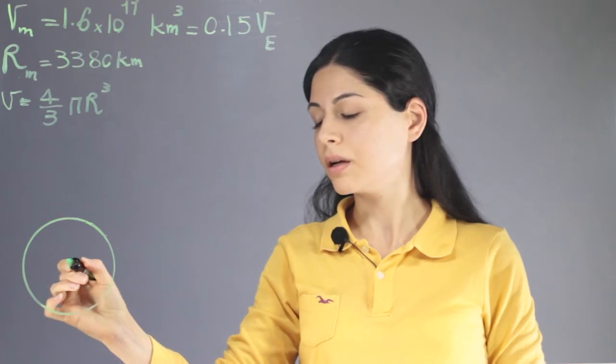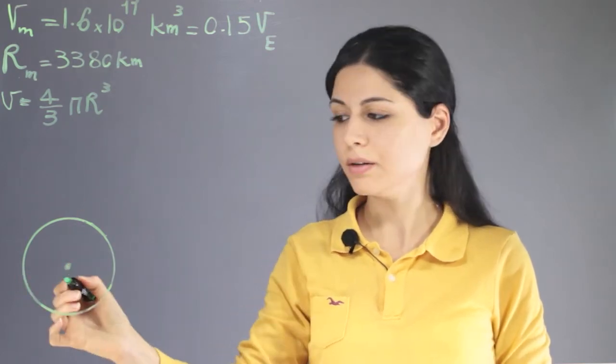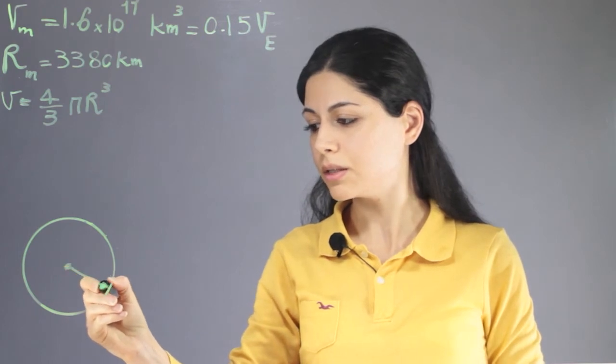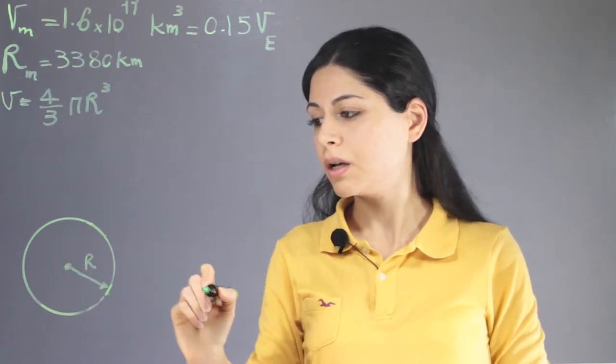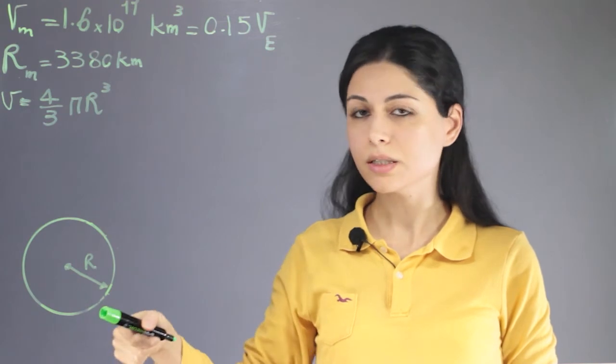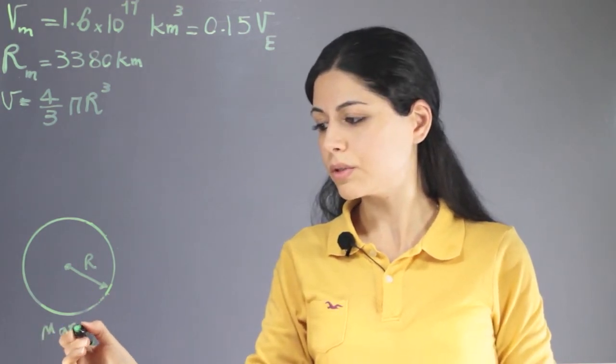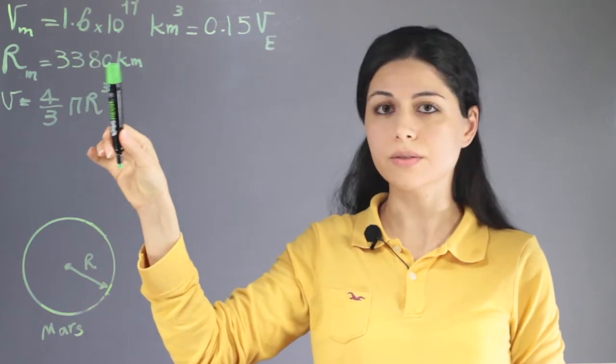So if this is the sphere and this is the center of the sphere, the radius is this vector. We can consider this sphere as Mars with a radius of 3,380 kilometers.